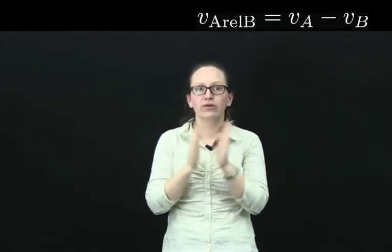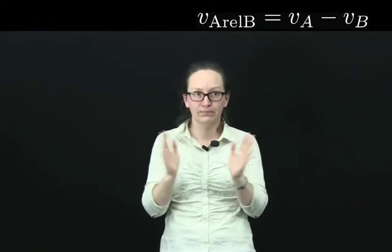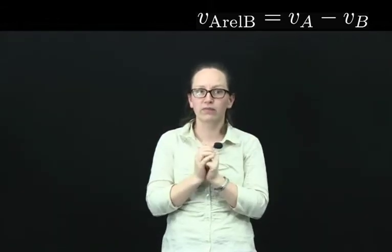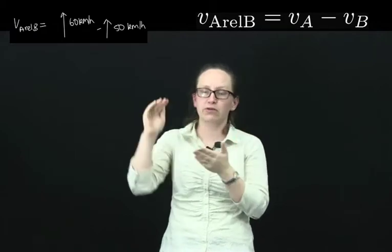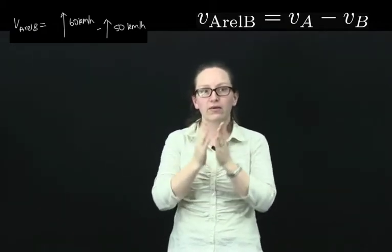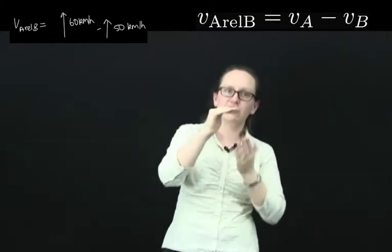So in this example, you're in car B. So you want to work out the velocity of A relative to you. So that's the velocity of A, which is 60 kilometres per hour in the same direction you're travelling, minus your velocity, which is 50 kilometres per hour.